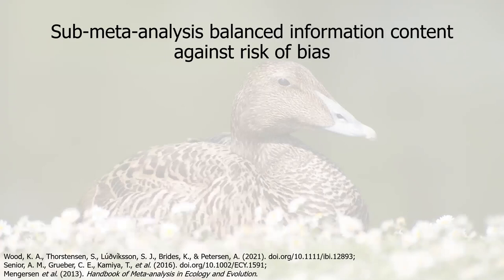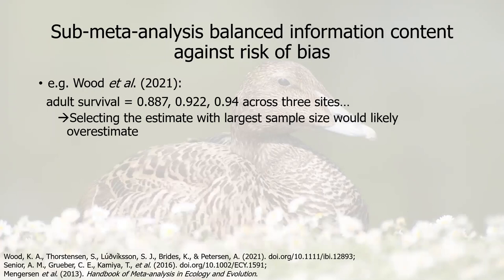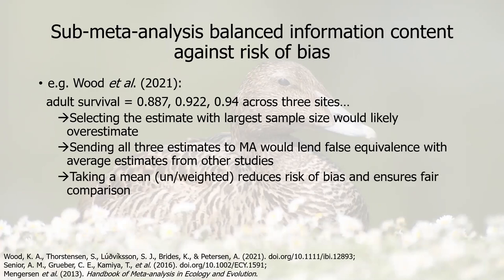Hence we hope that this sub-meta-analysis is balancing information content against risk of bias. With the Wood et al. case, adult survival is 0.887, 0.922, and 0.94 across those three sites. If we selected the estimate with the largest sample size, we would likely overestimate. If we sent all three estimates forward to a meta-analysis, this would give false equivalence to average estimates from other studies, which themselves likely represent some form of mean across sites or years. Whereas taking a mean — whether unweighted or weighted with our methodology — reduces the risk of bias and ensures fair comparison, retaining valuable information while avoiding overweighting potentially biased information.